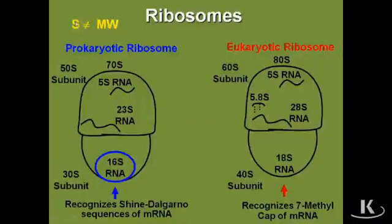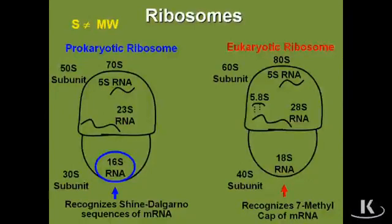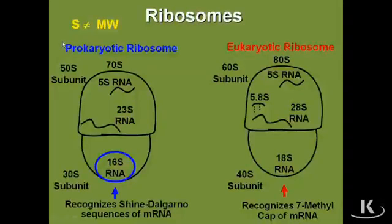Let's next look at prokaryotic versus eukaryotic ribosomes — you're always going to need to distinguish between these two on the exam. The first thing to keep in mind is that S is not equivalent with molecular weight. S means a Svedberg unit, and it's simply a sedimentation coefficient. For example, in prokaryotes the 50S and 30S ribosomes come together to make the 70S complete ribosomal unit — 50 plus 30 does not equal 70 because this is not additive; it's simply a sedimentation coefficient with a bit of arbitrary designation.